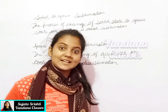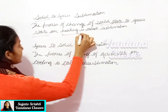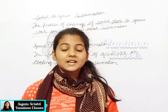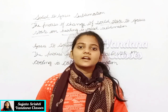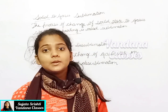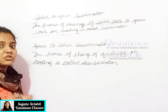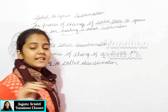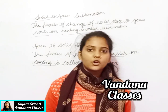Sublimation is the process of change of the solid state to the gaseous state on heating — when we heat a solid substance it directly converts into gaseous state. This process is called sublimation. Examples of sublimable substances are naphthalene balls and camphor. The direct reverse of sublimation is desublimation — the change of the gaseous state directly into the solid state on cooling.